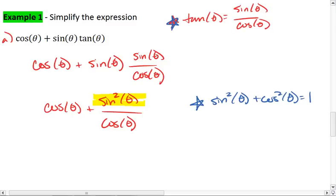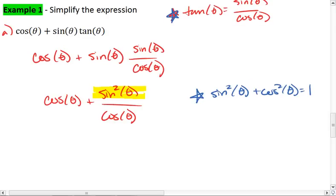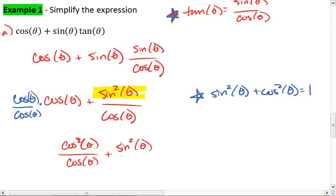The other thing you want to look for is fractions. We want to give these like denominators. To do that, we're going to multiply the cosine theta by cosine theta over cosine theta. Thus, we get cosine squared theta over cosine theta plus sine squared theta over cosine theta.